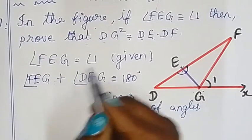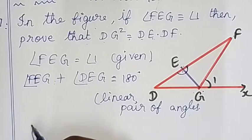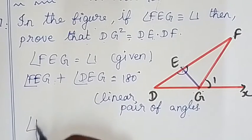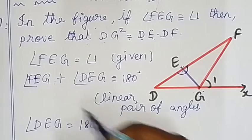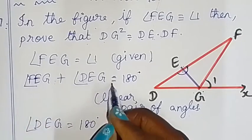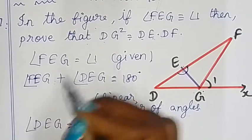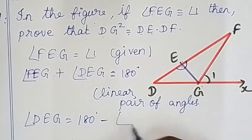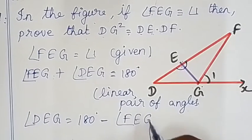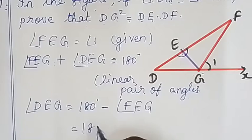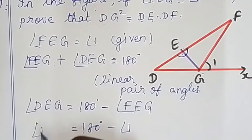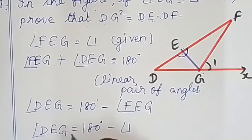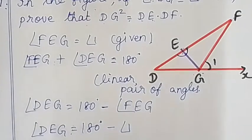Since angle FEG is equal to angle 1, we can substitute. So angle DEG is equal to 180 degrees minus angle 1.